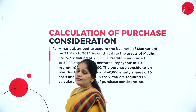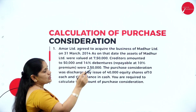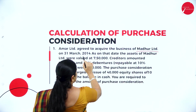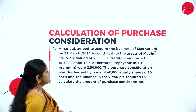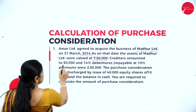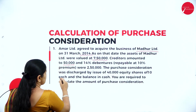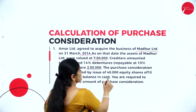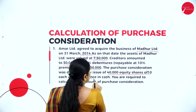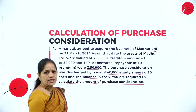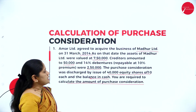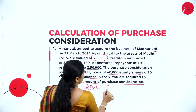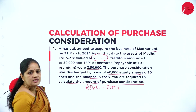Next we have a problem for calculation of purchase consideration. Amar Limited agreed to acquire the business of Madhur Limited on 31st March 2014. As on that date, the assets of Madhur Limited were valued at 7 lakhs 50,000. The creditors amounted to 50,000 and 14% debentures repayable at 10% premium were rupees 2 lakhs 50,000. The purchase consideration was discharged by the issue of 40,000 equity shares of rupees 10 each and the balance in cash. We are required to calculate the purchase consideration.